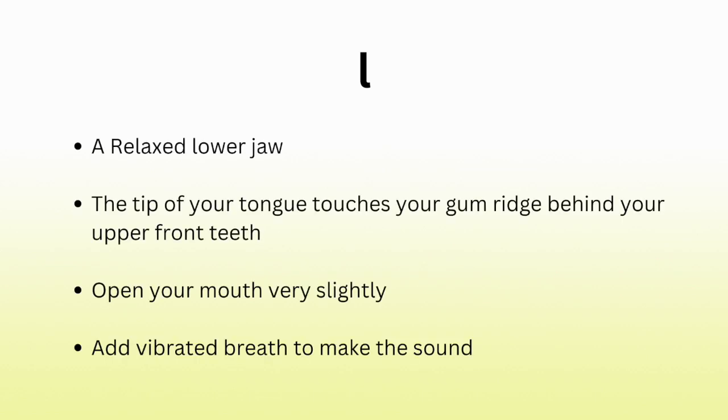And finally, we are going to move away from nasal continuants onto the only lateral consonant in the English language, l. The mechanical placement for the correct pronunciation of l is a relaxed lower jaw. The tip of your tongue touches your gum ridge behind your upper front teeth. You open your mouth very slightly. And you add vibrated breath to make the sound. That's the proper placement for the consonant l. Now let's just try saying it a few times: l, l, l. So now let's say a few l words for practice. Repeat after me.